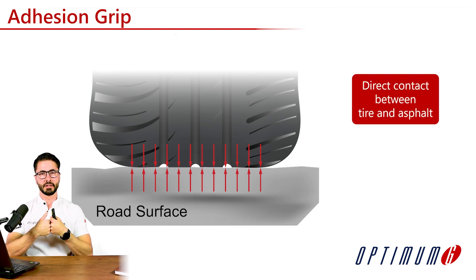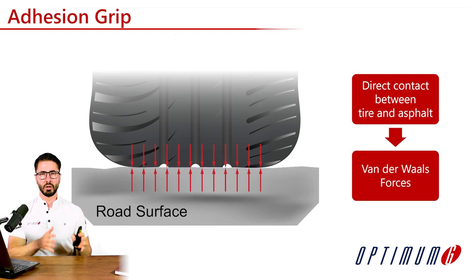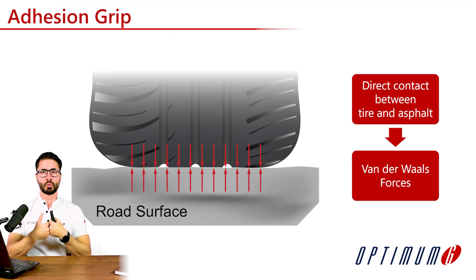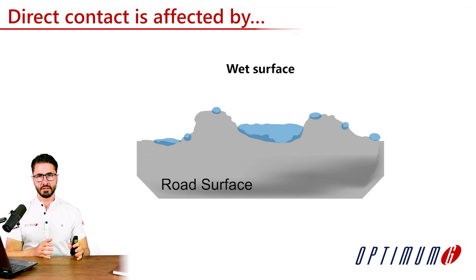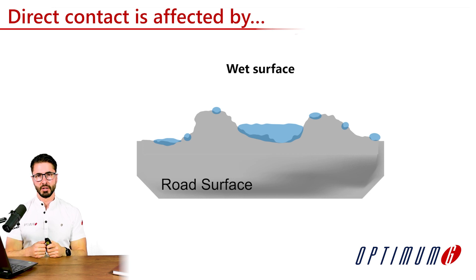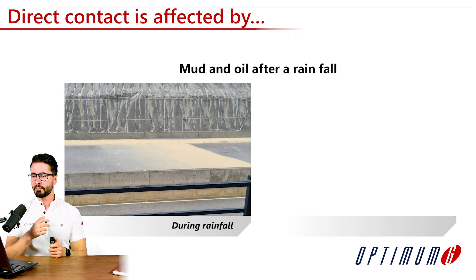Let's first discuss adhesion grip. It requires direct contact between the tire and the asphalt. Once we have this direct contact, van der Waals forces are generated. They have an attraction to each other, and when you try to slide, it's going to create a reaction force, which is basically the lateral or longitudinal forces that we see. Since anything that prevents that direct contact will decrease our adhesion grip — for example, if we have a wet surface, it will have a water film between the tire and the surface decreasing the grip. Besides that, mud and oil coming because of a rainfall will also decrease the grip.